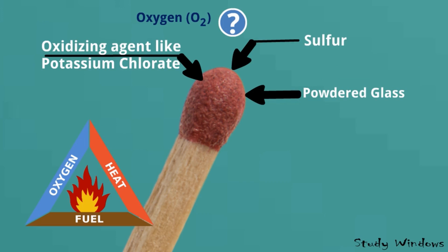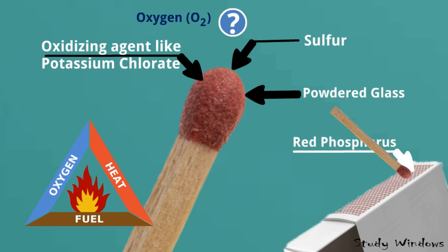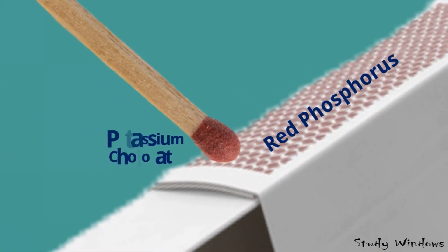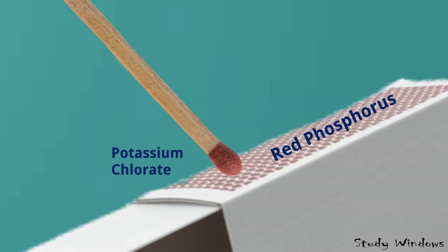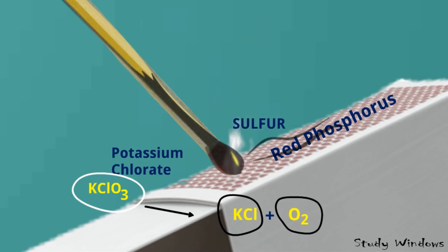On the side of the match box there is red phosphorus. We make friction of the match stick on the match box, and due to the friction heat is generated. Red phosphorus reacts with potassium chlorate, and this produces potassium chloride and oxygen. This oxygen helps to burn the sulfur. So heat is there, oxygen is there, and the fuel — sulfur — is there, so burning will happen.